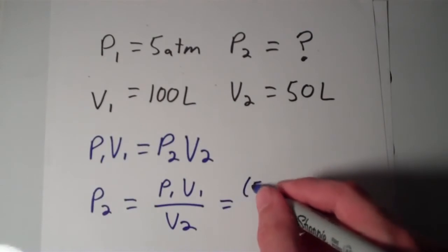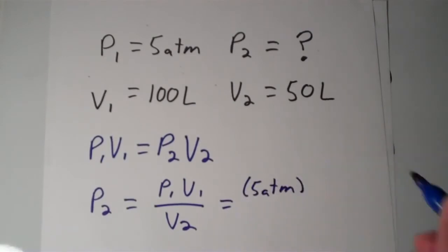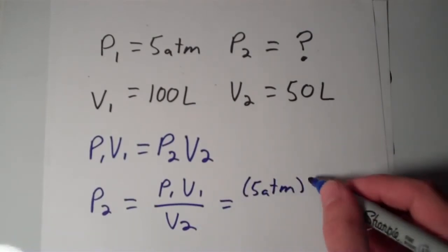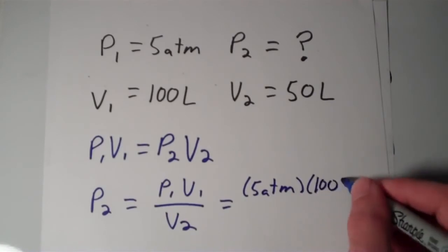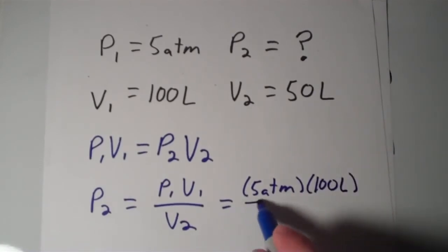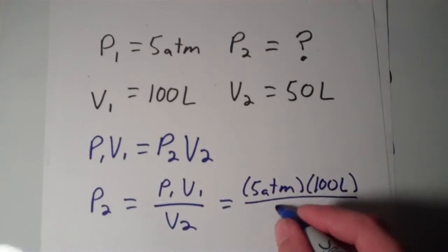And P1 is 5 atmospheres, and V1 is 100 liters, and V2 is 50 liters.